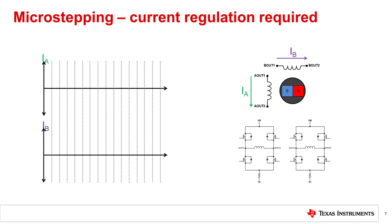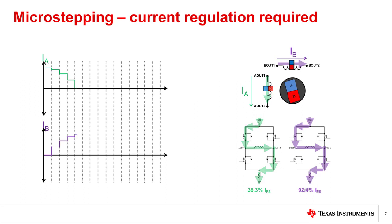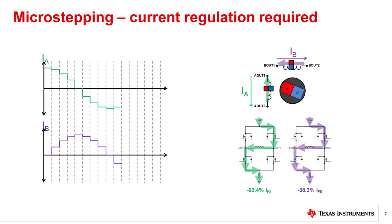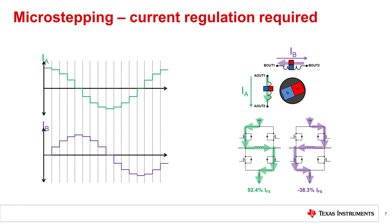Using current regulation, integrated stepper drivers can achieve even smaller step sizes. This animation shows 1/4 stepping. The driver regulates the current in the stepper coils to achieve rotor positions between the full-step locations. Using integrated current regulation techniques, many drivers can achieve 1/16, 1/32, or even 1/256 micro-stepping.